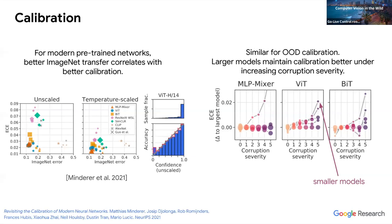Perhaps more importantly, this holds for out-of-distribution data. In these experiments, networks are transferred to ImageNet, but calibration is measured on the ImageNet-C benchmark — corrupted versions of ImageNet. As corruption severity increases, smaller models tend to have a larger calibration degradation relative to large models. This indicates that the calibration of all networks decreases with higher corruption severity, but smaller models degrade faster than large pre-trained models — which is reassuring for pre-trained foundation models.